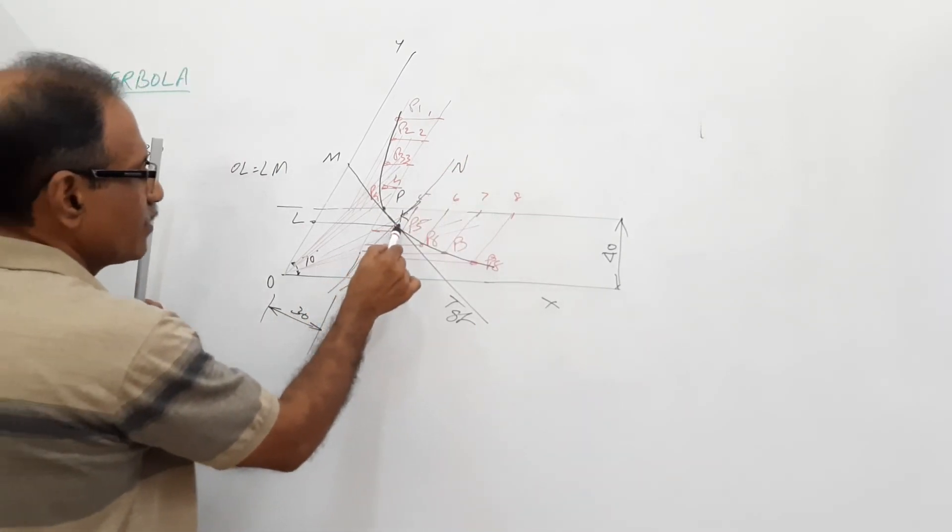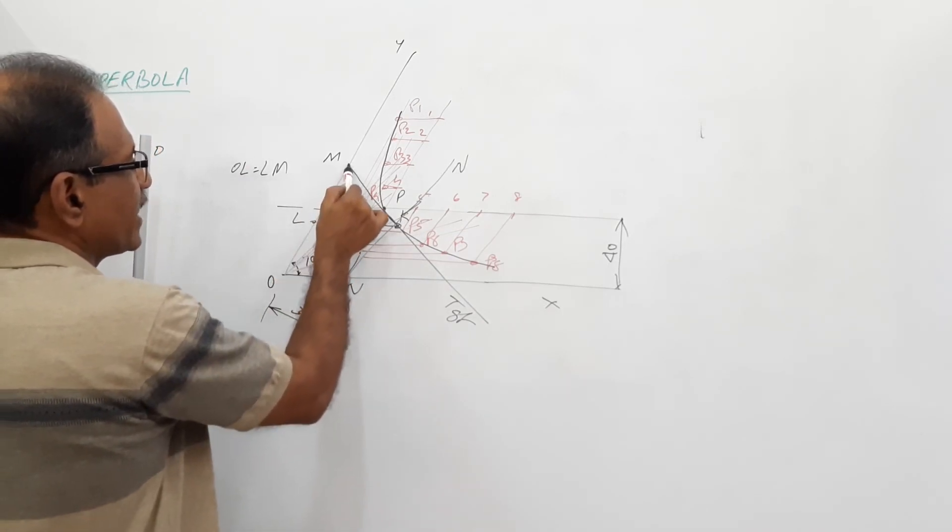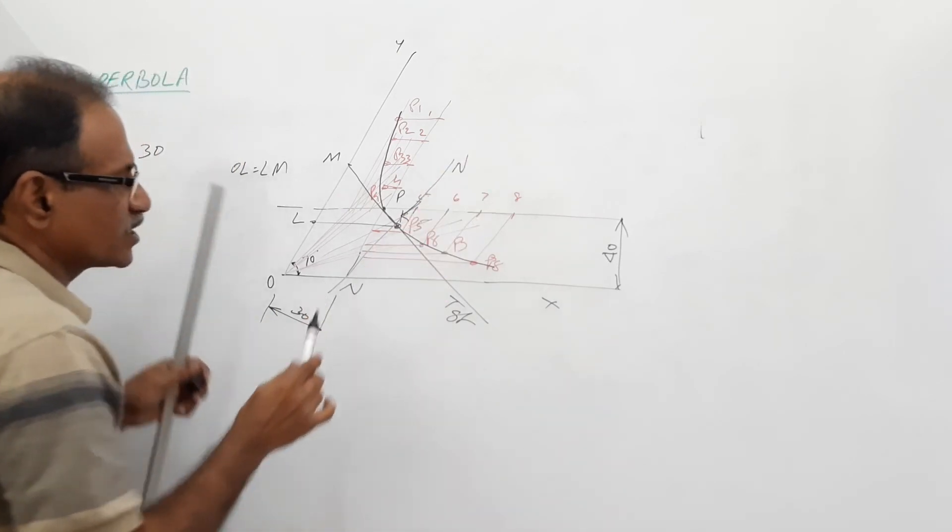I repeat: at K, draw a horizontal line through K, you get L. Take OL and mark M. OL is equal to LM. MK is the tangent, perpendicular is the normal.